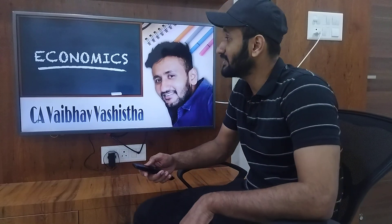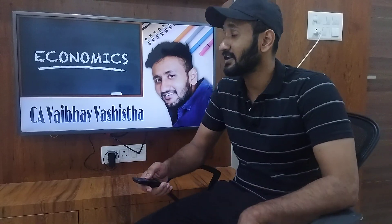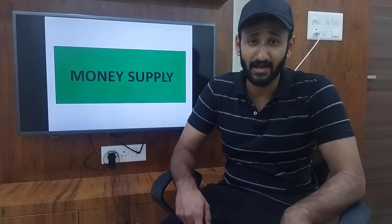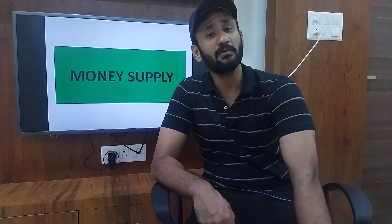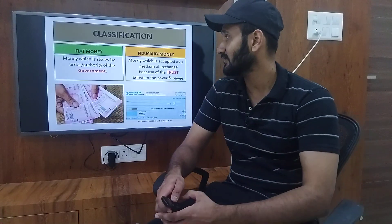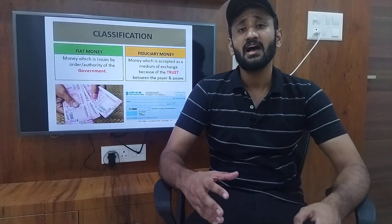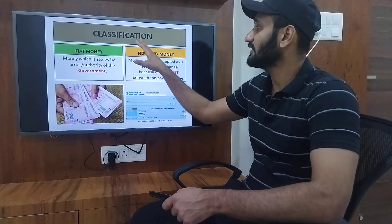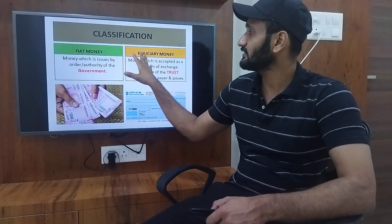Students, we are looking at our Money in Banking topic, and today in our class we are going to study money supply. But before starting money supply, I want to cover a small topic first — how our money is classified. So, money can be classified into two types: fiat money and fiduciary money.